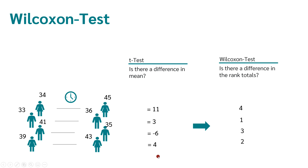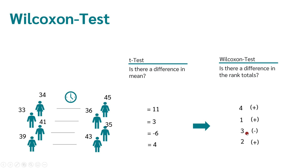In the Wilcoxon test, we don't use the differences of means, but we form ranks and then compare these ranks with each other. 3 is the smallest value in terms of amount and gets rank 1; 4 is the second smallest and gets rank 2; 6 gets rank 3, and 11 gets rank 4. We assign a plus to all positive values and a minus to all negative values. We will go through this slowly and also look at an example.